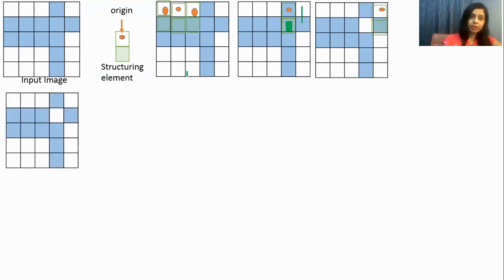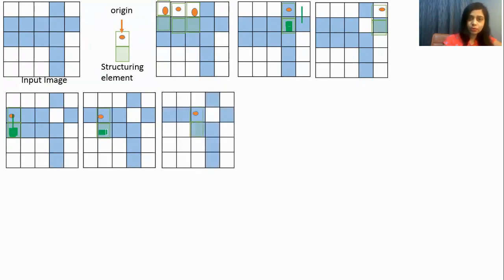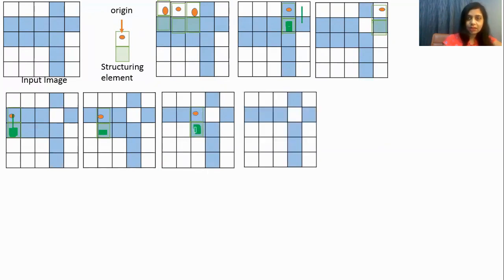We get the same output. Now at the next position we overlay and again there is overlapping between this origin and blue, so we should remove this. Then next position — again blue and origin are overlapping, so we remove this. Then again the next position — there is overlapping so we remove this pixel. When we put it at the next position there is no overlapping so no change.